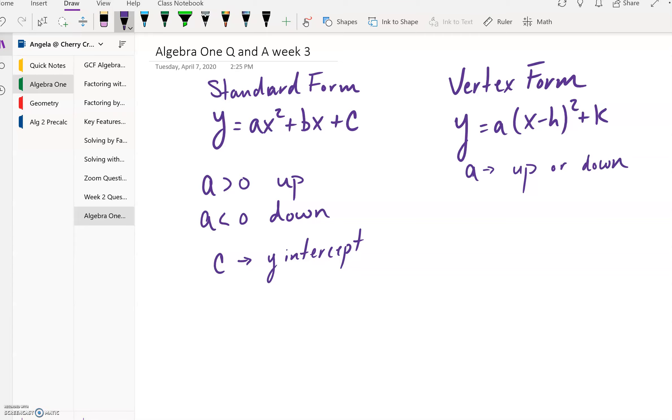And then the (h, k) remember is the actual (x, y) coordinate of your vertex. That's why it's called vertex form, because this value of h and this value of k when you see them in this form are your values for your vertex.